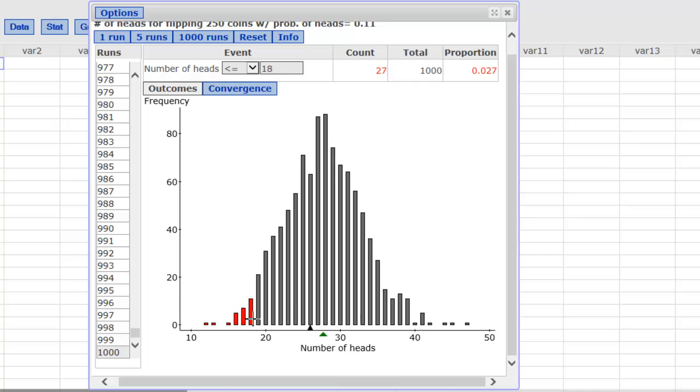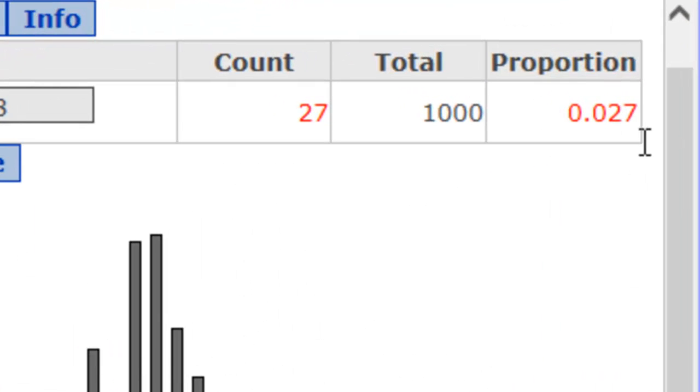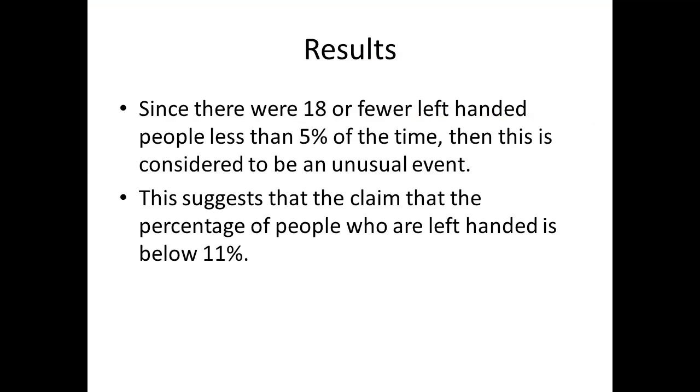In red, we see the bars that represent 18 or fewer heads, and if I look up to the upper right corner, that tells me what proportion were 18 or fewer, and here that's .027 or 2.7%. So since there were 18 or fewer left-handed people less than 5% of the time, we consider this to be an unusual event.